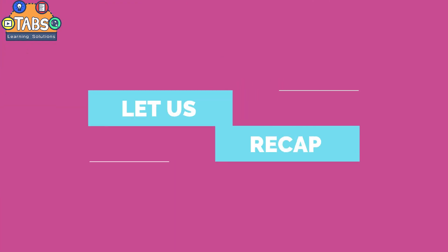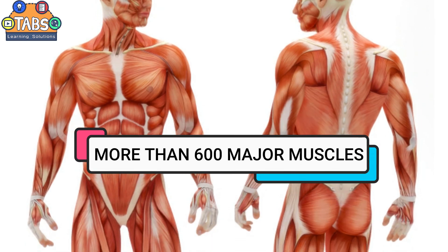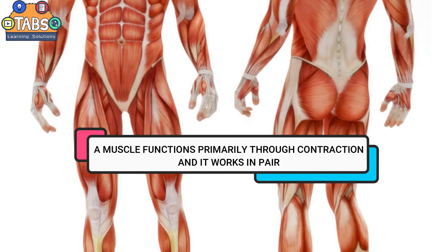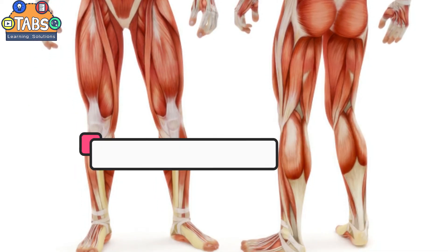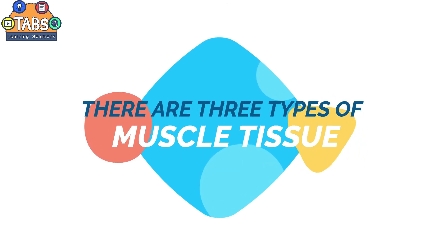Now let's recap. The human body consists of more than 600 major muscles. A muscle functions primarily through contraction and it works in pairs.